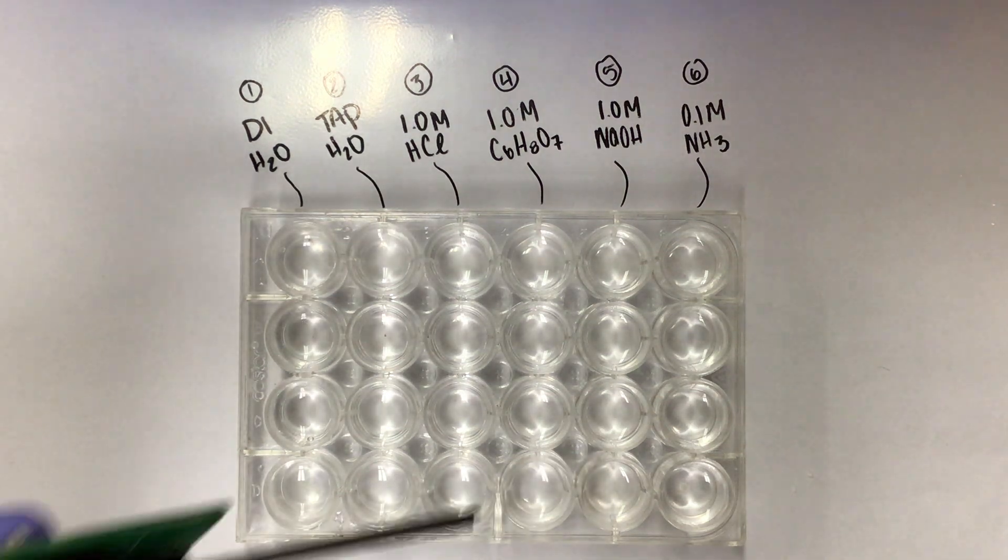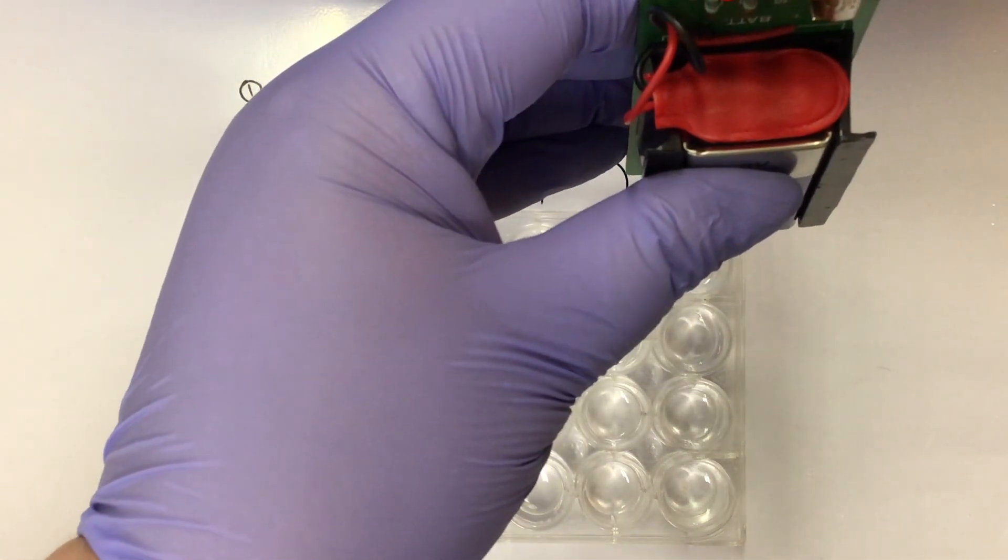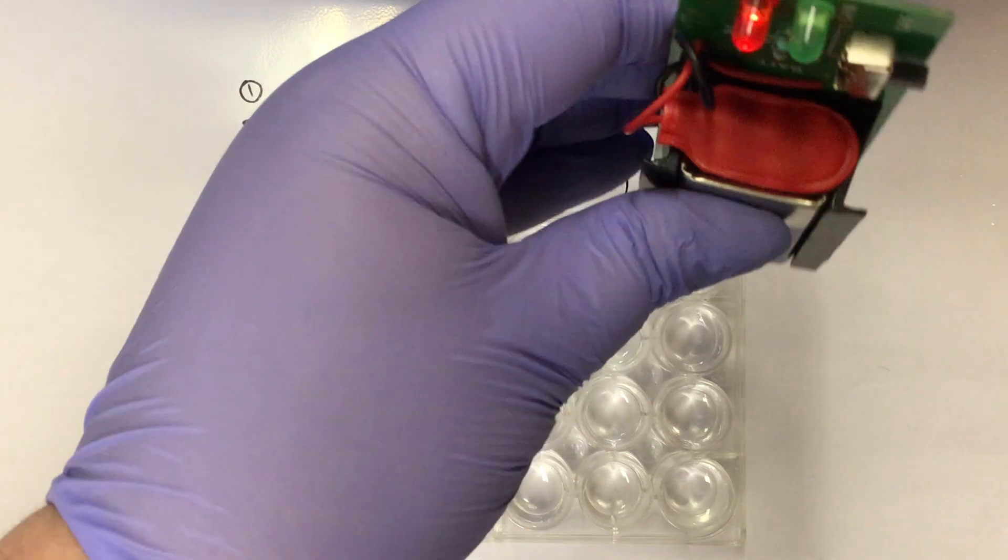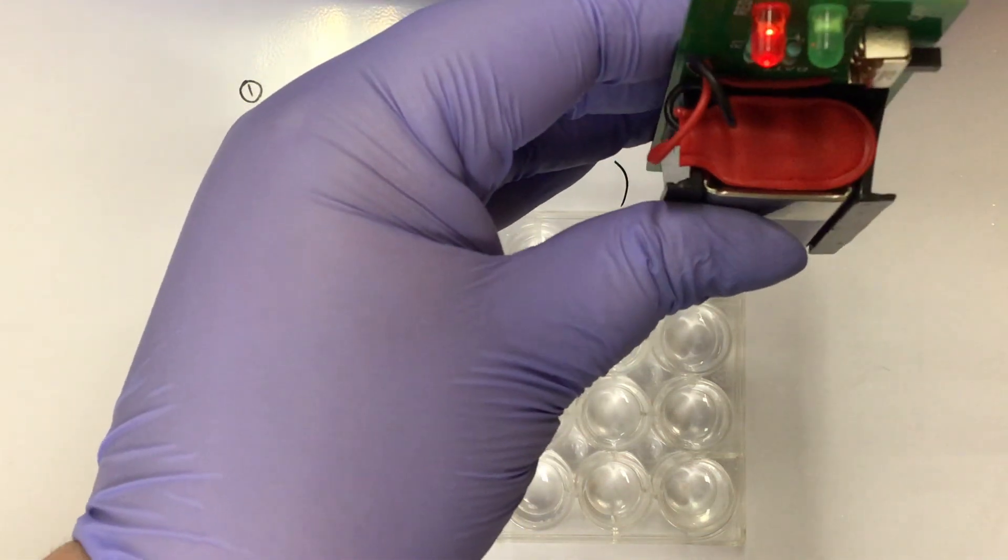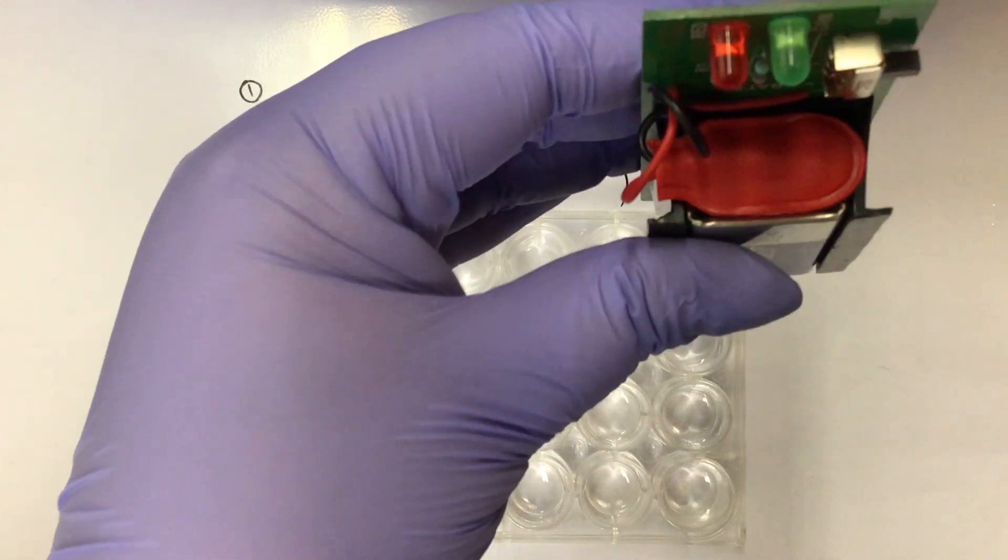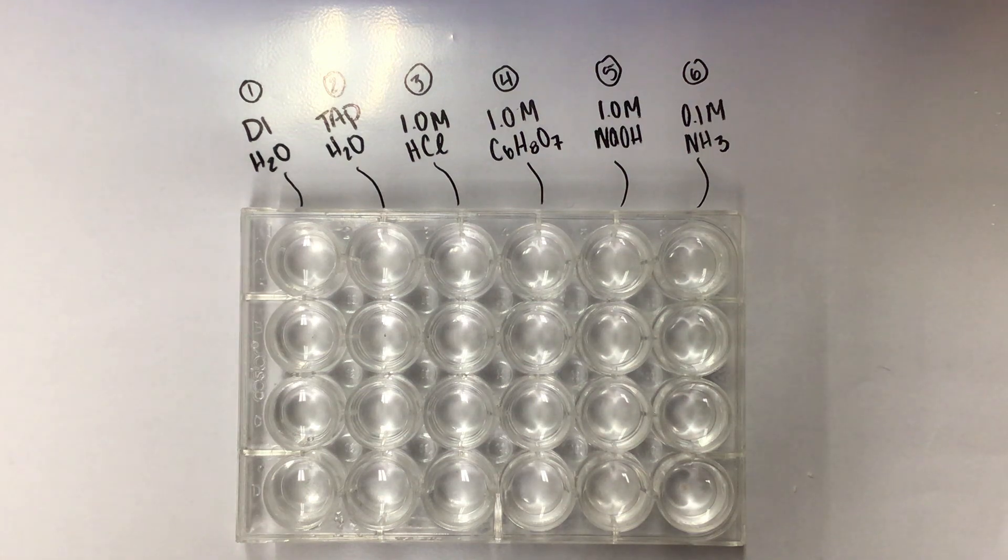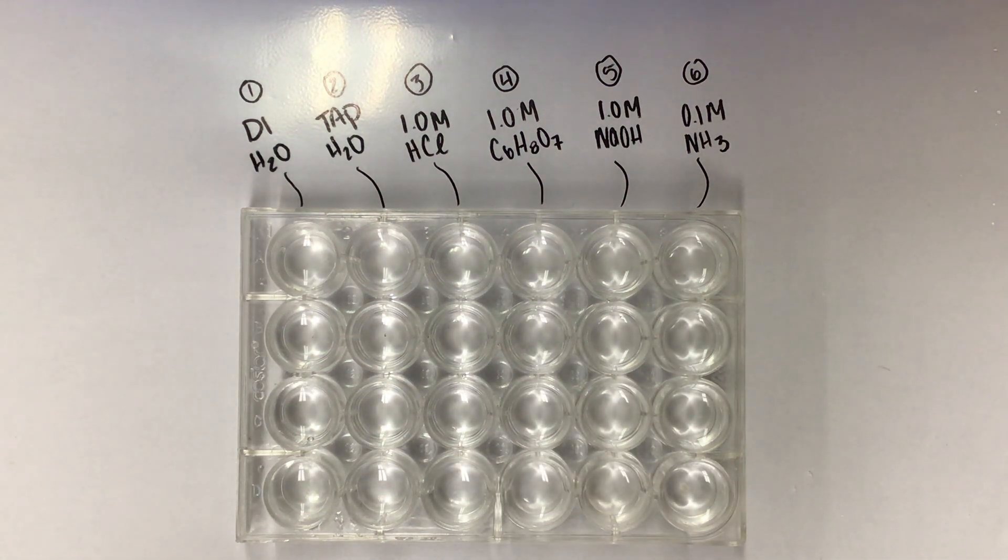And lastly, 0.1 molar NH3. For this one, you can see that red light bulb, it's really barely illuminated. The green light bulb is not lit at all. That's it for our conductivity tests.